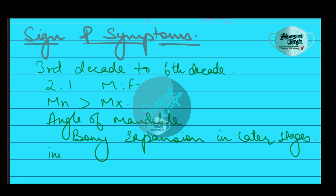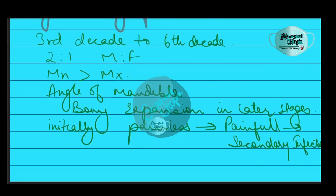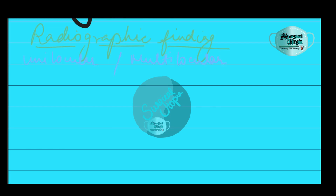As the cyst grows inside the bone, it can cause bony expansion or infection, which may lead to pain. Initially it remains painless, but may become painful due to infection. Although bony expansion is uncommon — since the OKC grows due to increased epithelial turnover rather than osmotic pressure — in a few cases expansion can be seen. When symptoms are present, they usually take the form of pain, swelling, and discharge due to secondary infection.